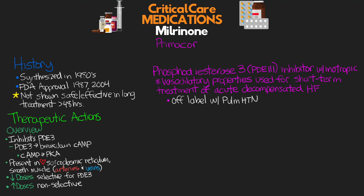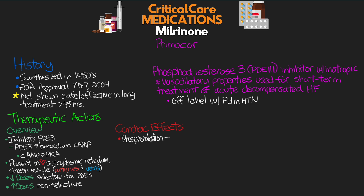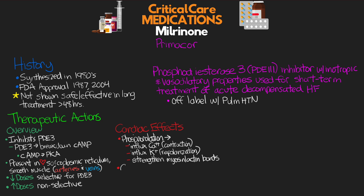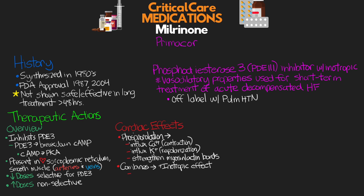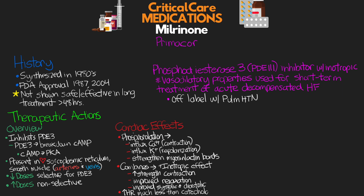Specifically looking at cardiac effects: the phosphorylation by PKA allows for an easier influx of calcium needed for myocyte contraction, leading to increased inotropy and chronotropy. It also allows for an influx of potassium for repolarization, and it strengthens the bonds of the myosin and actin filaments used in contraction. All of this combines to produce a positive inotropic effect, increasing the strength of cardiac contraction as well as improved relaxation, giving the patient improved systolic and diastolic function and ultimately optimizing cardiac output. Any increased heart rate is actually much less with Milrinone than we see with traditional catecholamines.